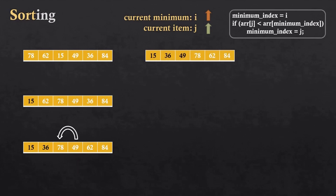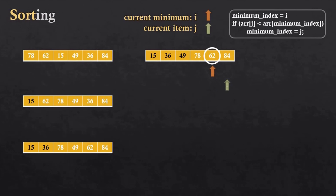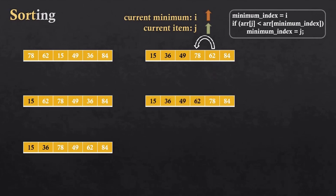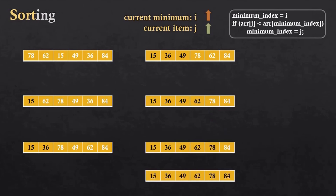For the fourth iteration, the current minimum and current item will start from the third index. The current item will move forward until it finds the minimum. When the current item is smaller, the current minimum will be updated. The current item moves forward; 62 is the smallest in this iteration, so it will be swapped with the third index. For the fifth iteration, nothing will be swapped. For the last index we don't need to check because the array has already been sorted.